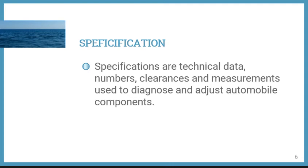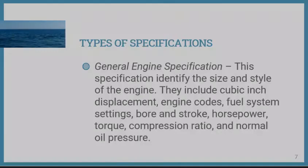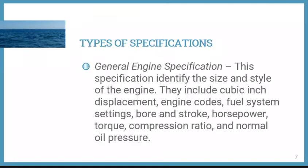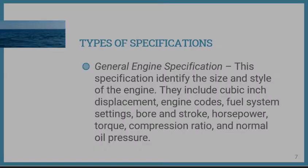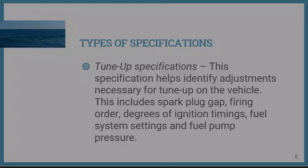There are several types of specifications for cars. The first is the general engine specification, which identifies the size and style of the engine. This includes cubic inch displacement, engine codes, fuel systems, bore and stroke, horsepower, torque, compression ratio, and normal oil pressure.